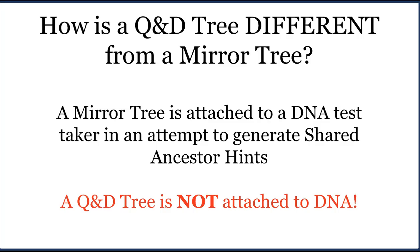One important thing to remember is that a quick and dirty tree is not a mirror tree. The difference is that a mirror tree, although it is a tree built for your genetic match, is then attached to your DNA test results in an attempt to generate shared ancestor hints at Ancestry. The quick and dirty tree is never attached to anyone's DNA. You're simply building it in hopes of finding surnames and locations you recognize, rather than trying to generate shared ancestor hints.